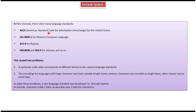Before Unicode, there were many language standards: ASCII for the United States, ISO 8859-1 for Western European languages, KOI-8 for Russian, GB18030 and BIG-5 for Chinese, and so on.